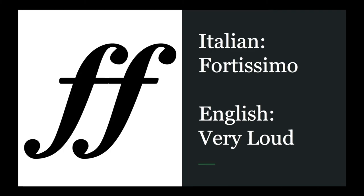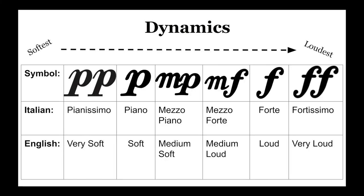Fortissimo means very loud. Here you will see our completed dynamics chart. Just like we could have softer than pianissimo, we could have louder than fortissimo, with three F's being fortississimo, and so on. Please notice that the chart goes from left to right, softest to loudest: pianissimo, piano, mezzo piano, mezzo forte, forte, and fortissimo.